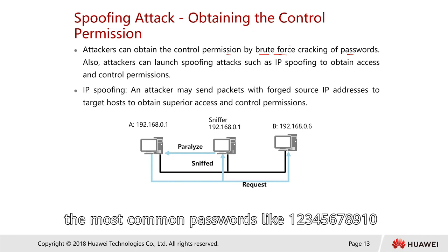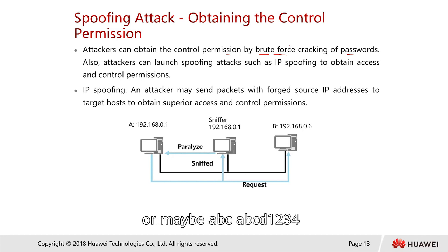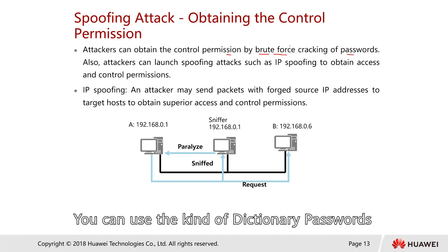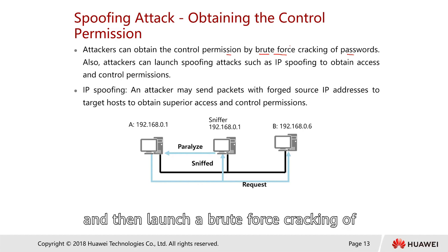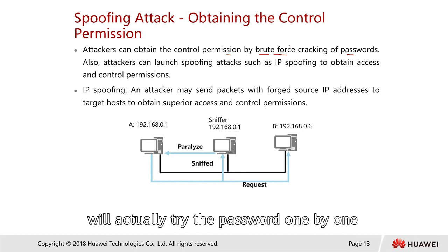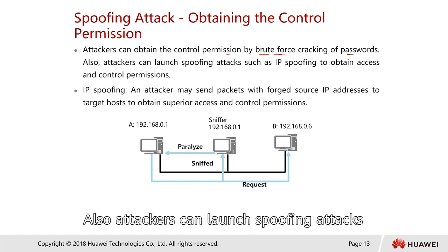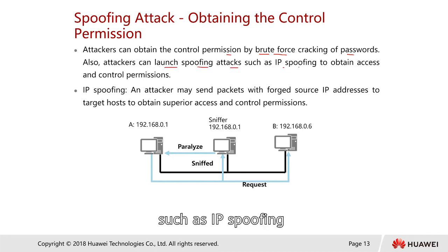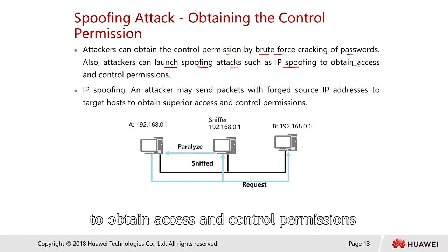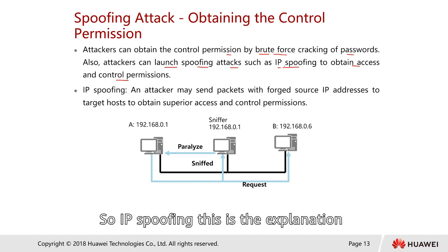The attacker can also use a dictionary attack — downloading a list of very common passwords from the internet, such as 123456789, or ABCD1234. This brute force cracking software tries passwords one by one. After cracking the password, the attacker can also launch a spoofing attack such as IP spoofing to obtain access and control permission.